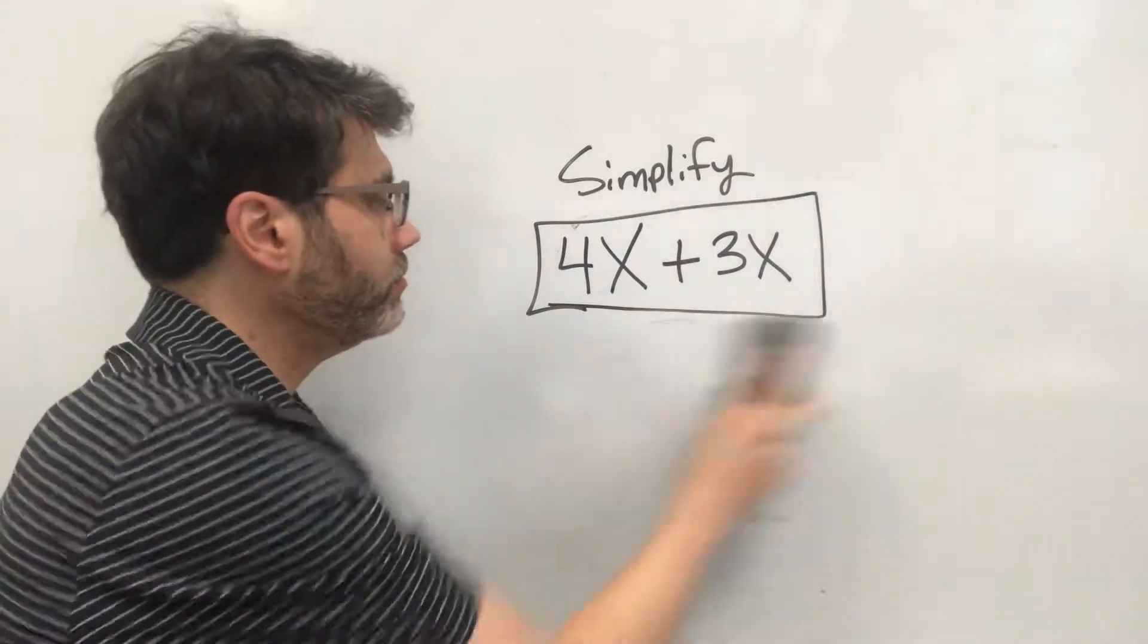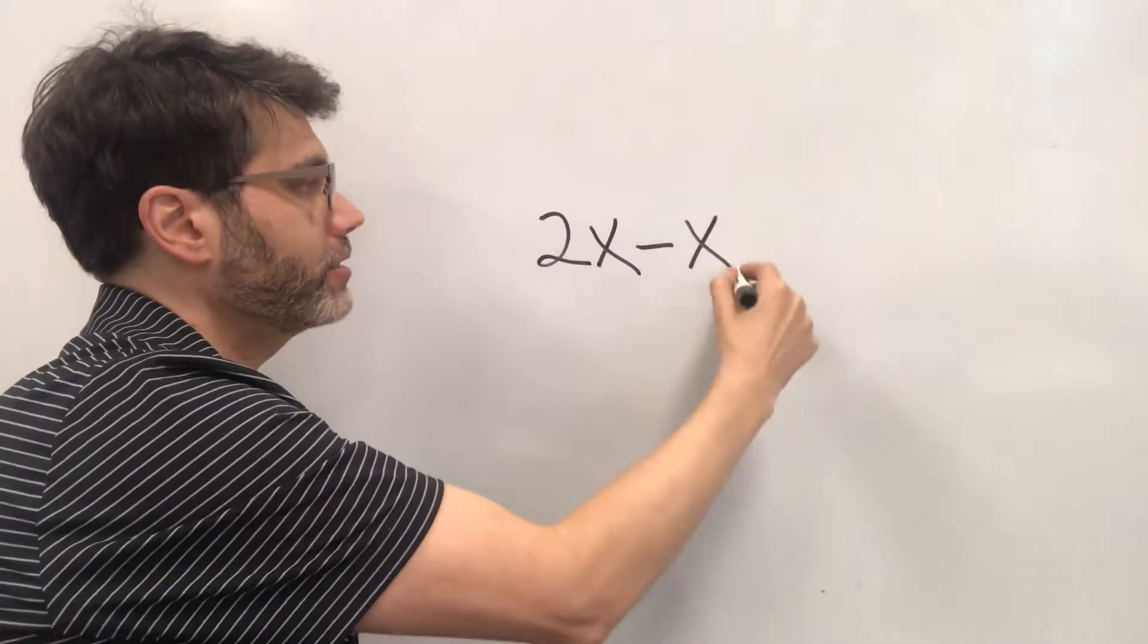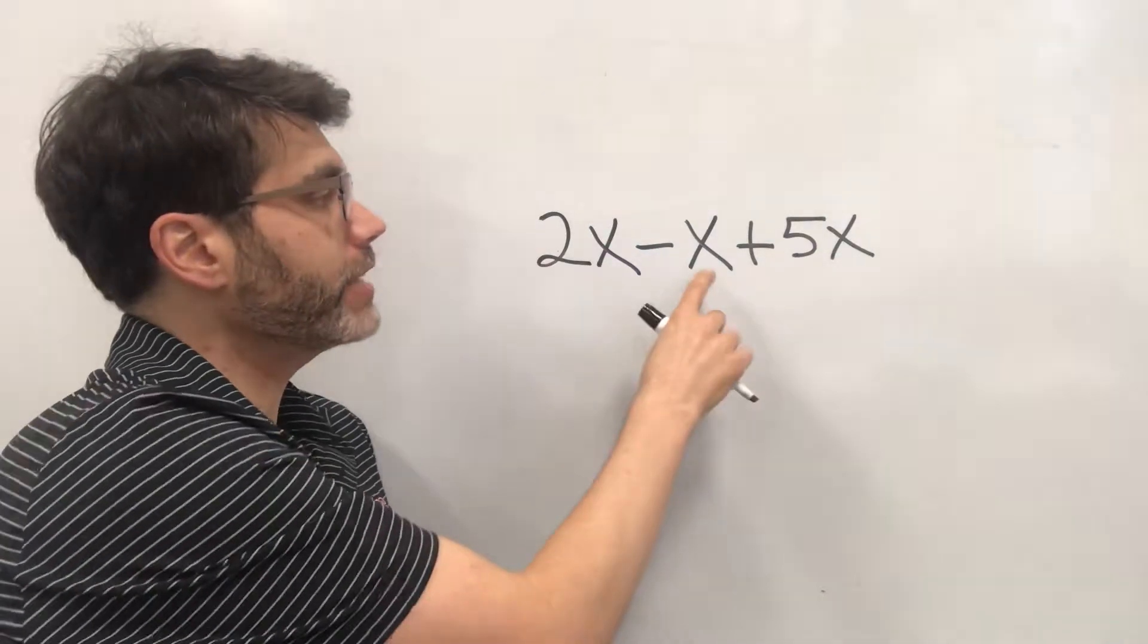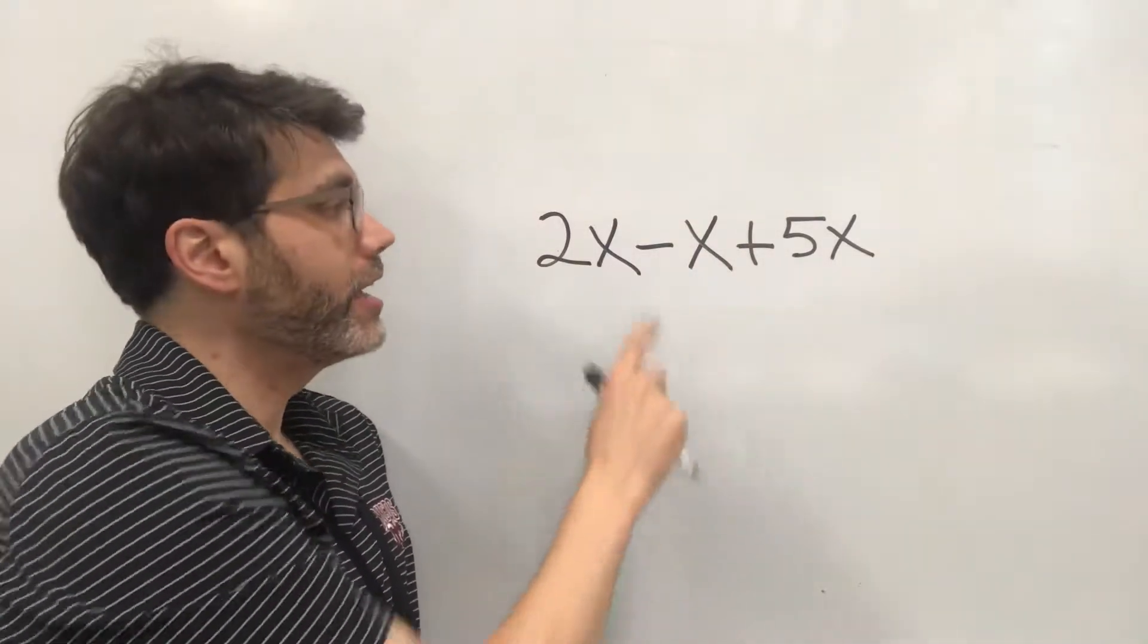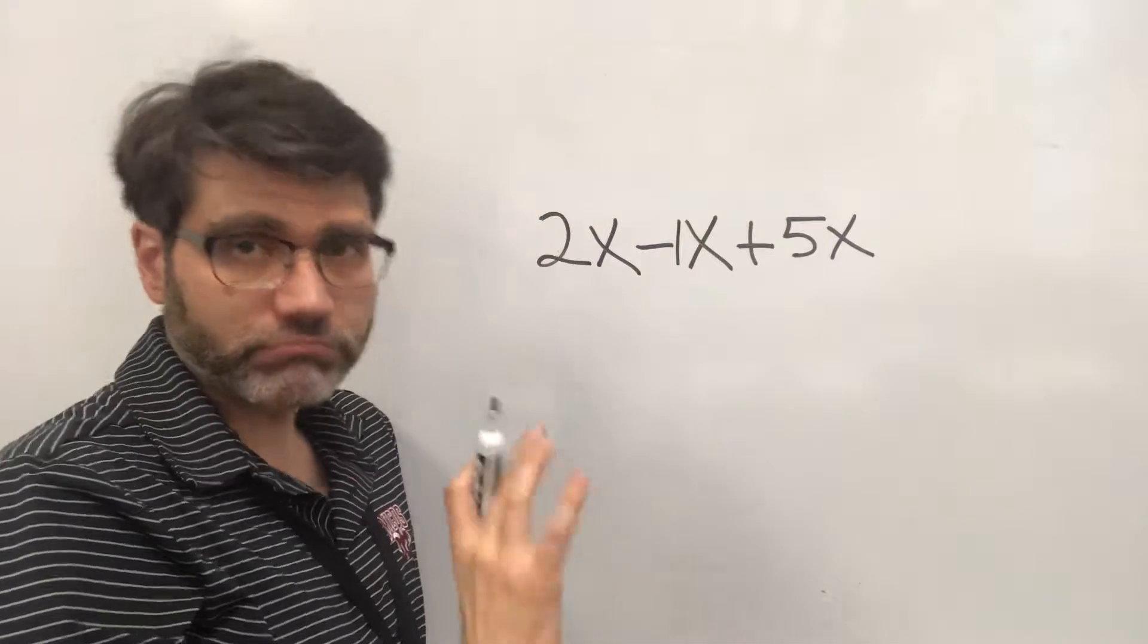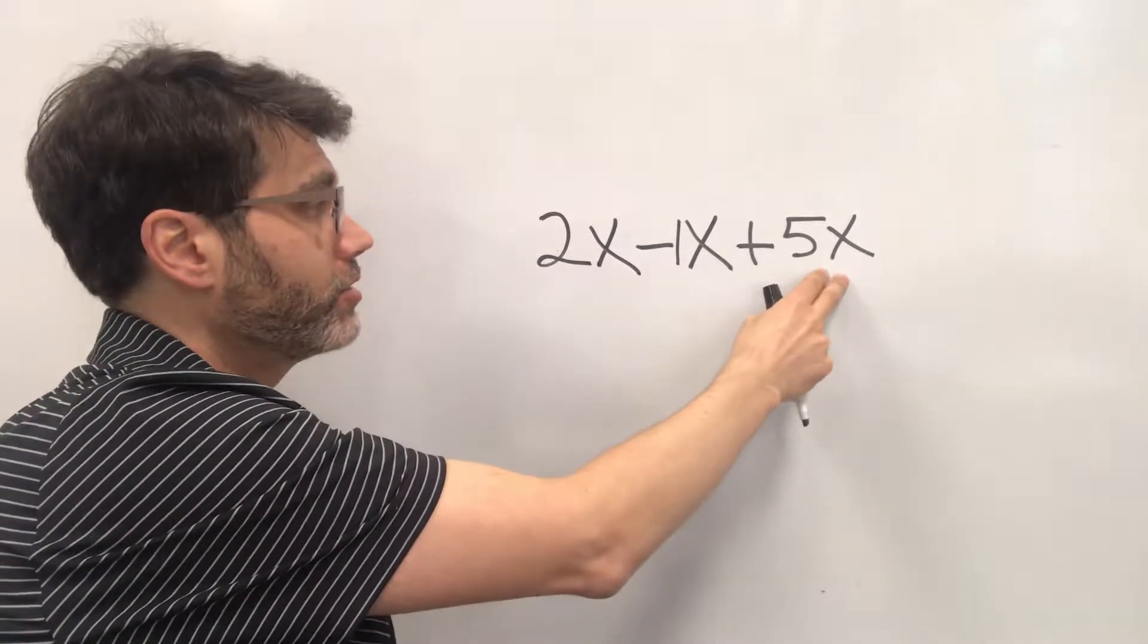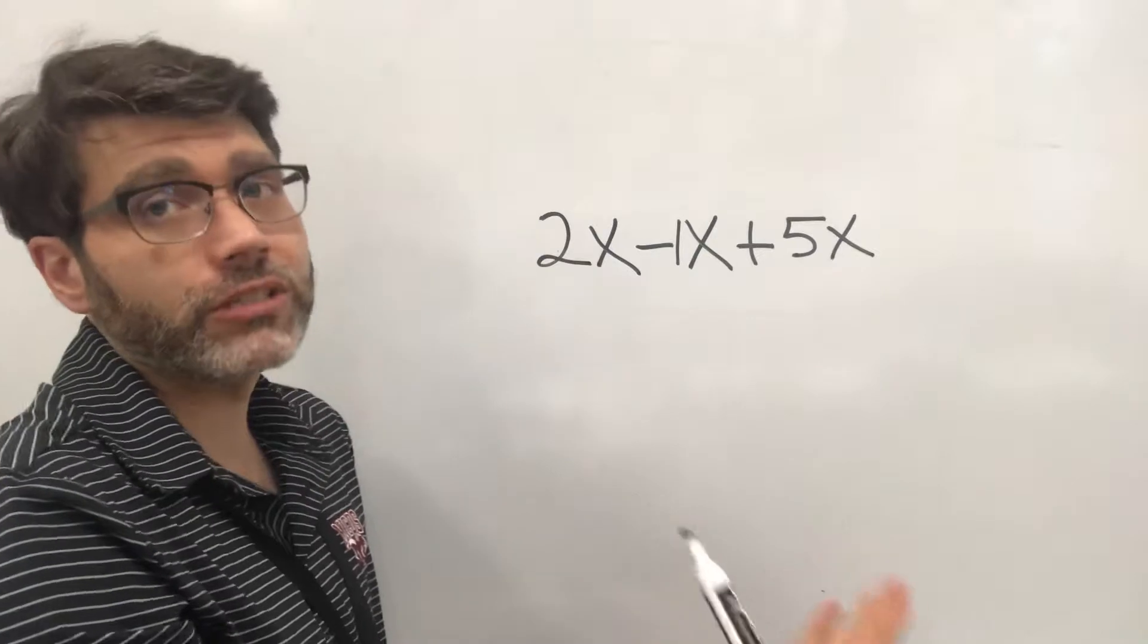Let's do another one. Let's say that we had 2x minus x plus 5x. If you want and you do not have to but if it makes it easier for you to understand this. Whenever you're given a variable with no coefficient remember 2 and 5 are coefficients here. If you have an x with no coefficient if you want to you could put a little 1 there. It's not necessary but it may help you. So now we have 2x's. We're subtracting 1x and then we're adding 5x's. So let's move from left to right. We're gonna use PEMDAS just like we've always done. It's just that we're using variables now.